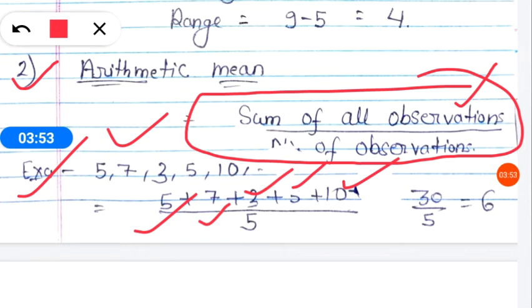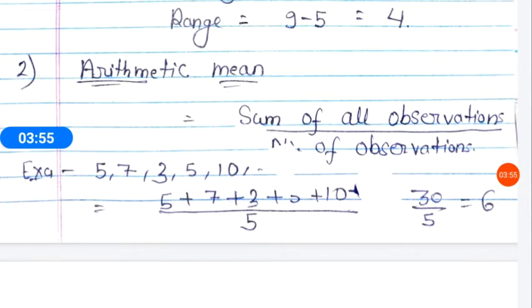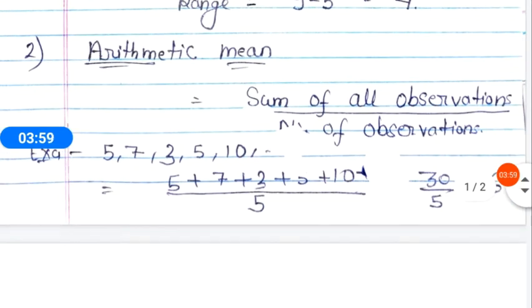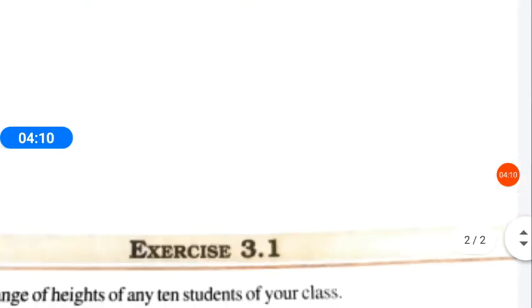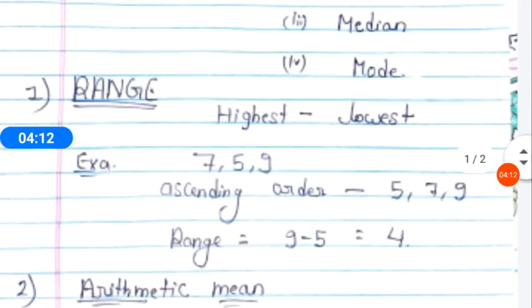After adding all of these, now upon, what will we write? Number of observations. So here how many observations are there? So 1, 2, 3, 4, 5. So this is 5. So we have written this, then we will solve it, so our answer will be 6.